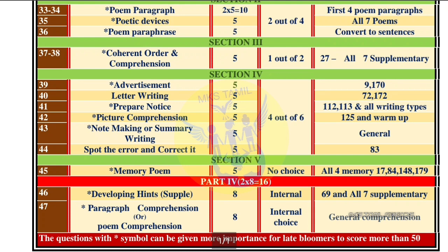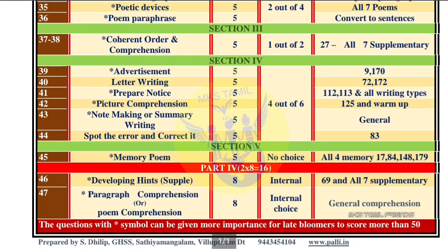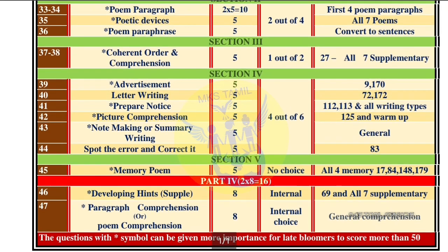If you have 4 out of 6, you can add 4. Don't think about summary — you can see that in the 5th section. There is a memory poem section — there is no choice for memory poems. You can see all memory poems on page numbers 17, 84, 148, and 179. That is covered in Part 6.